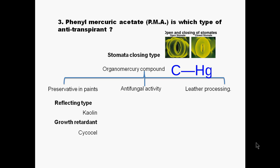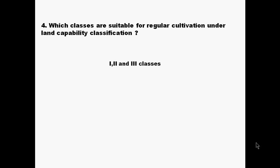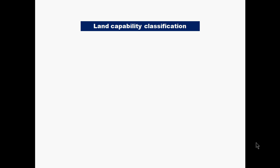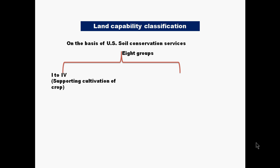The next question asks: which classes are suitable for regular cultivation under land capability classification? The answer is the first, second, and third classes. Land capability classification is based on the U.S. Soil Conservation Service, which divided land into eight groups. The first to fourth groups are able to support cultivation of crops, while groups five to eight are not.